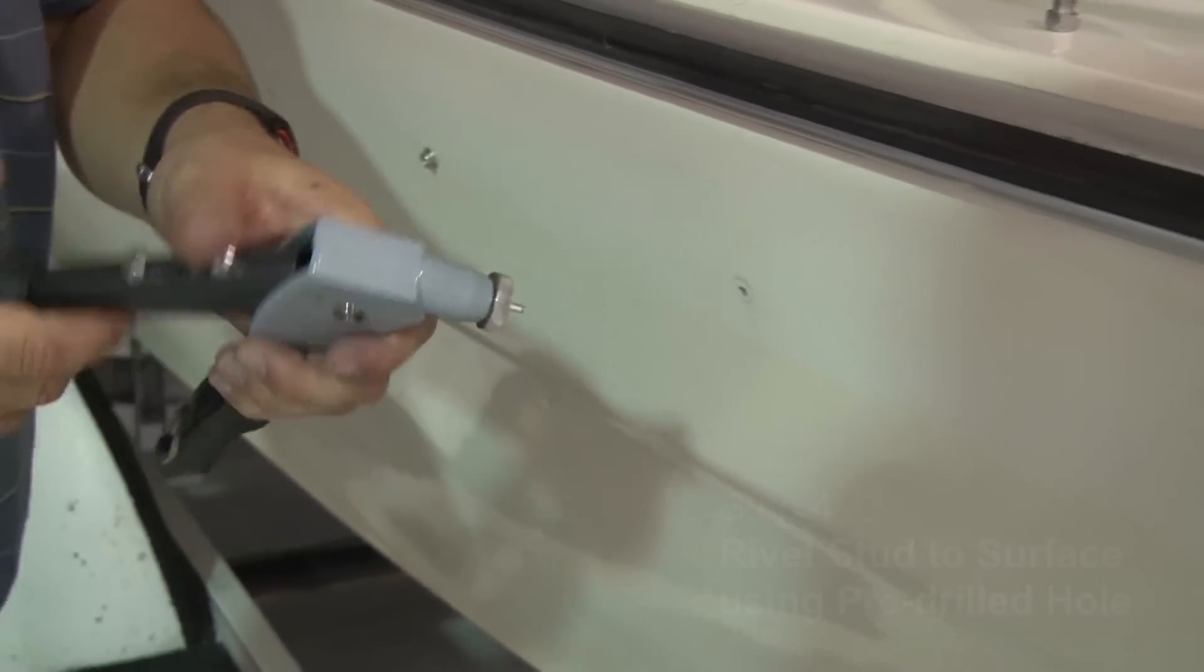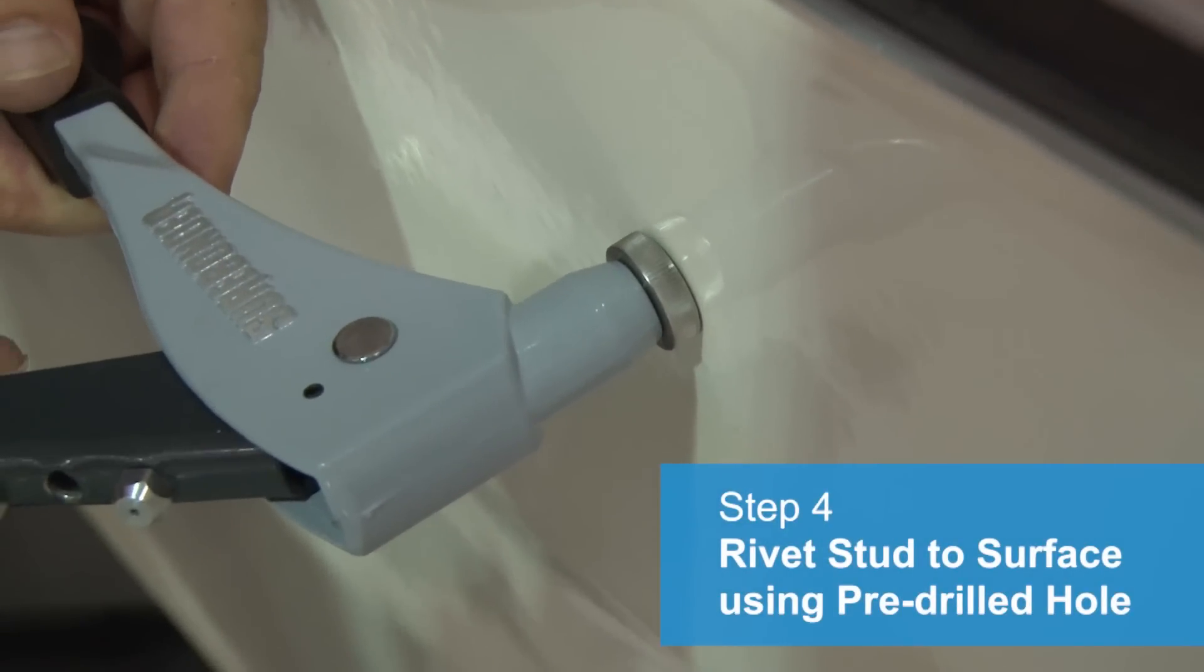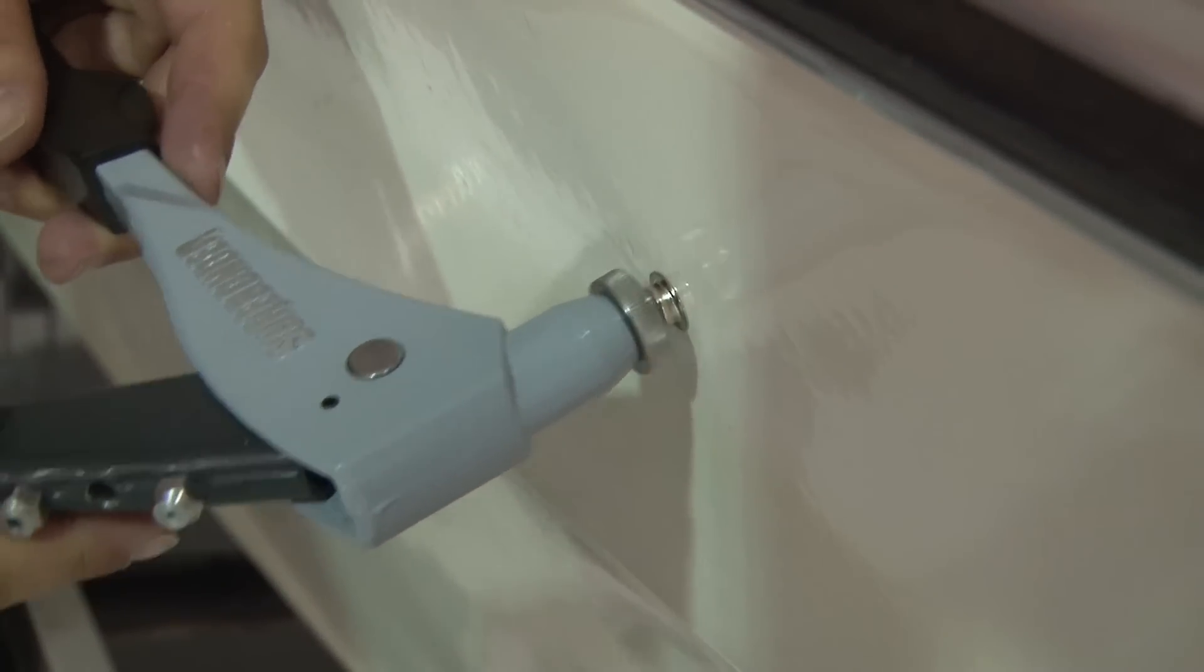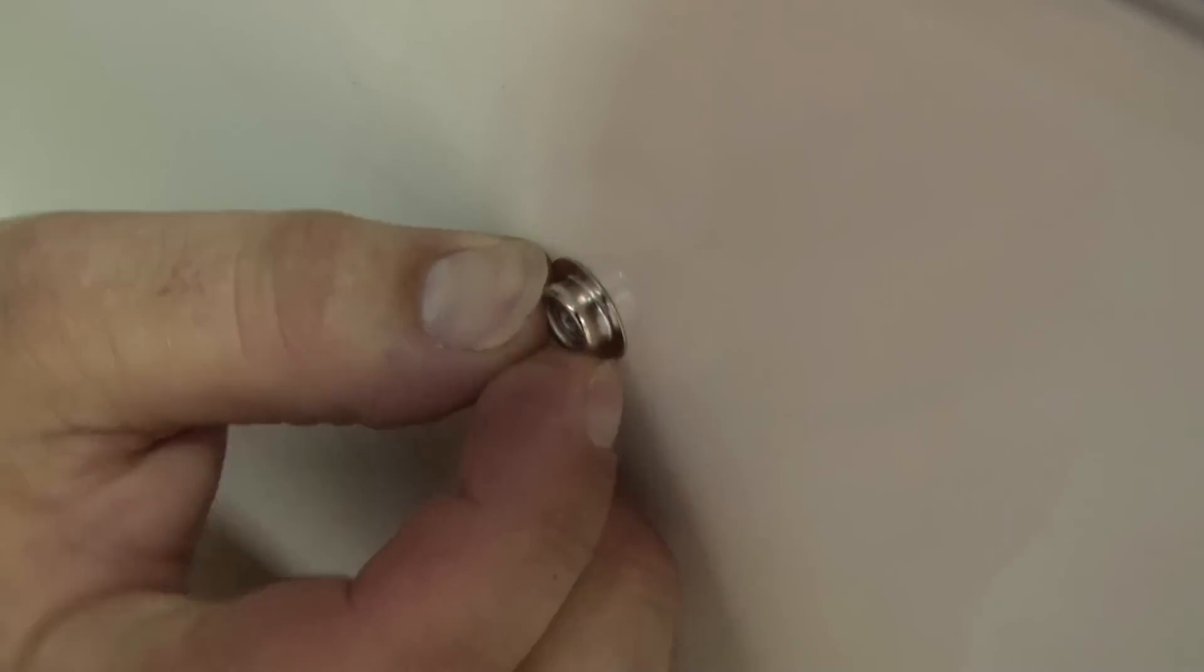Step 4: Rivet stud to surface using a pre-drilled 1⁄8 inch hole and press the lever on your riveting tool. Each time you depress the lever until the mandrel breaks, you want to be sure that the die is resting flat on the surface that you're mounting the snap to.